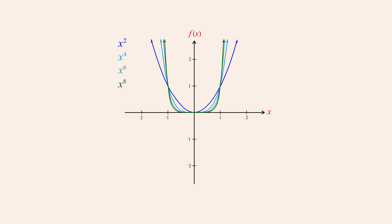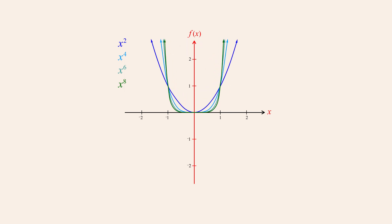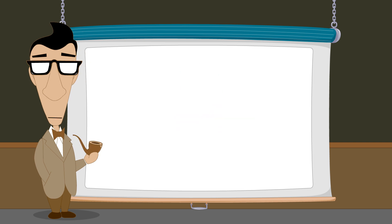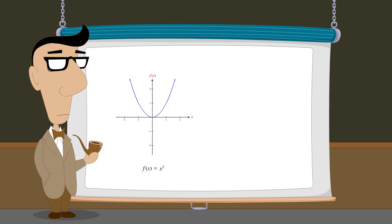Another important characteristic of these graphs is that they are symmetrical with respect to the vertical axis. This means that if their graphs are reflected across the vertical axis they remain unchanged. The primary difference between these graphs is the rate at which the functions increase as x gets further from the origin. As an example, let's compare the graphs of x-squared and x to the sixth power.